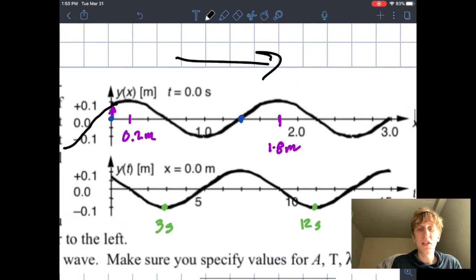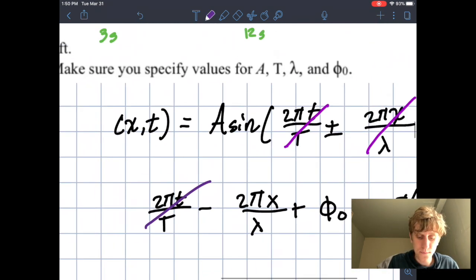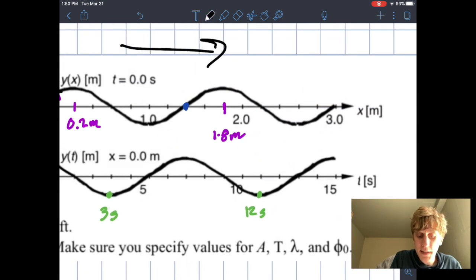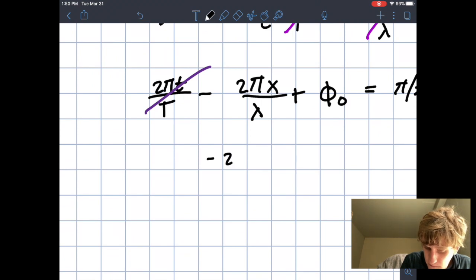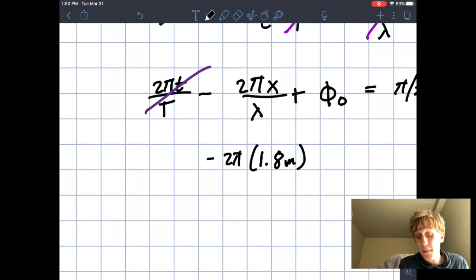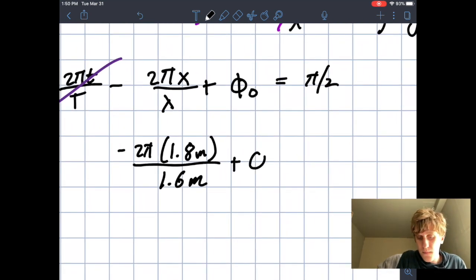Now in this graph, time is zero. So we can just cross out this first piece. x at this point is 1.8. So let's plug that in. We divide by the wavelength, which is 1.6 meters and all this is equal to pi divided by 2. Now all we have to do is rearrange this equation to determine the phase constant.